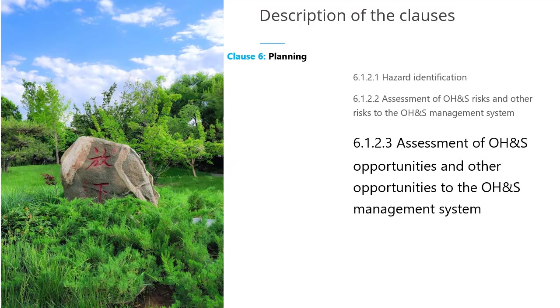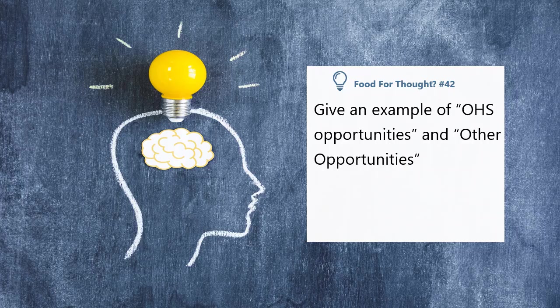Clause 6.1.2.3 requires that the organization shall establish, implement, and maintain a process to assess OHS opportunities to enhance OHS performance and other opportunities for OHS management system improvement. OHS opportunities include third-party audits that identify significant non-conformities which serve as opportunities for improvement, or the availability of less hazardous raw materials. Other opportunities include the availability of software tools to manage a paperless OHS management system, or government reducing taxes on certain equipment that may be used as engineering controls.